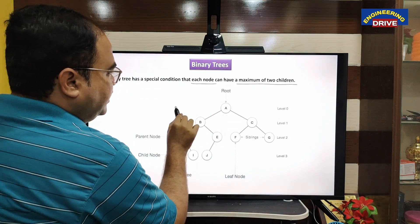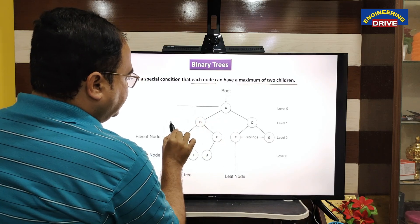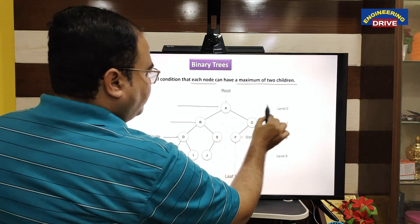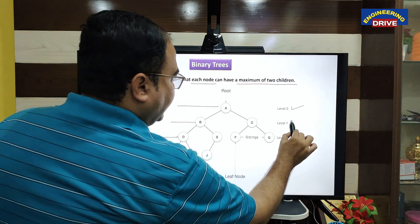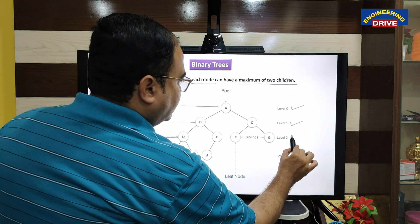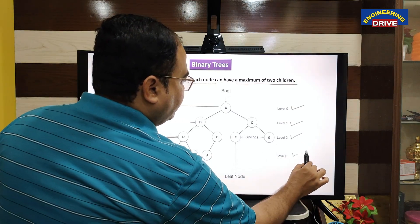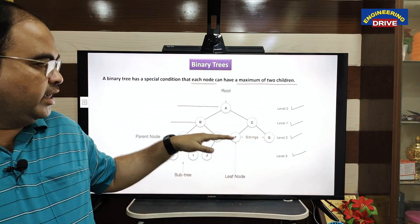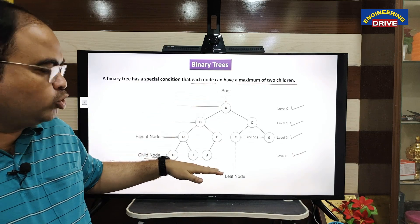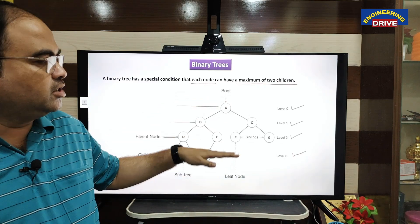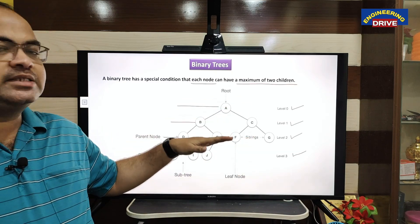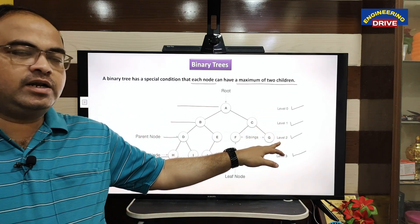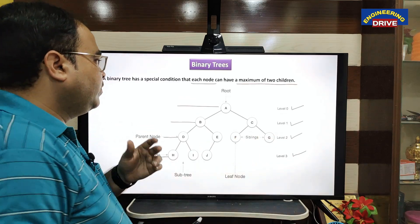One more thing we need to see in this binary tree is the levels. This is level zero, this is level one, this is level two, and this is level three. So in this binary tree there are four levels. We start counting levels from the root node and count up to the leaf node — wherever the leaf node is, that is the last level.